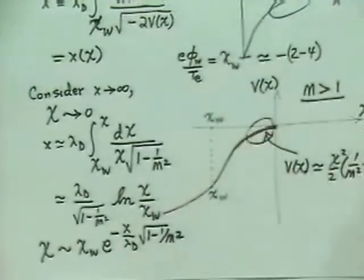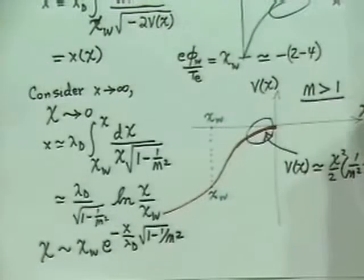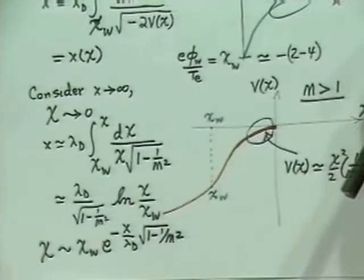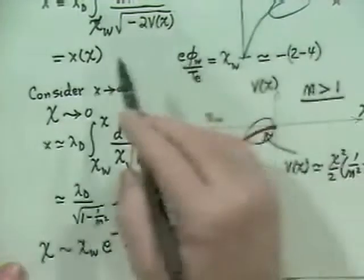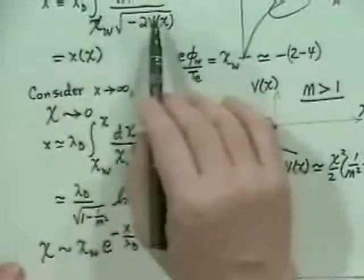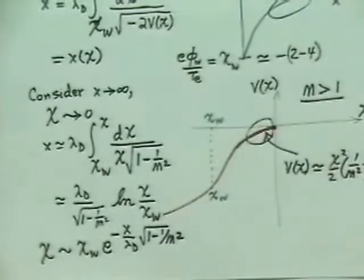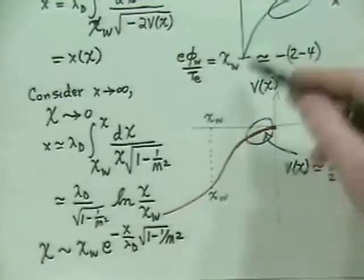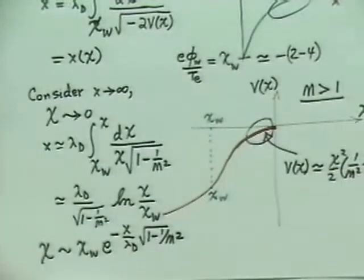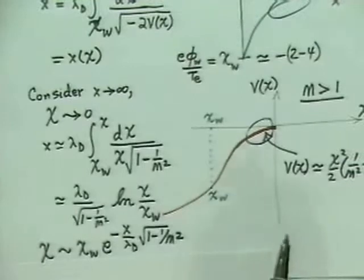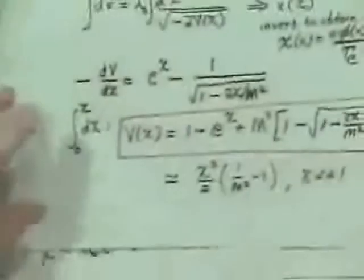The point of all this is that solving second-order differential equations is sometimes difficult. By this backwards procedure — an analogy to a particle moving in a conservative potential — we convert the second-order problem into a first-order quadrature: x as a function of χ, then invert to get the detailed shape of the Debye sheath. In practice it's a bit of a pain, and usually we just say it's approximately exponential.